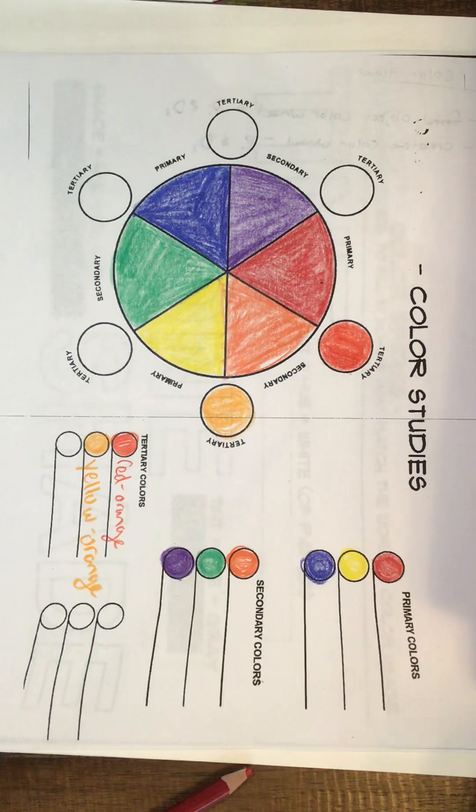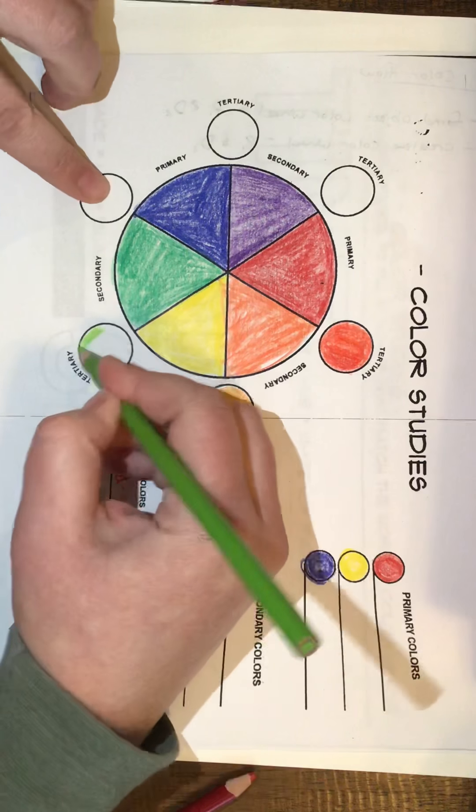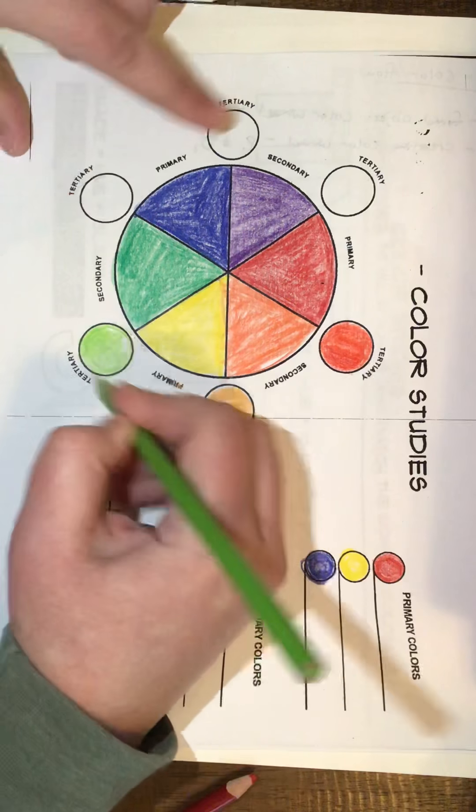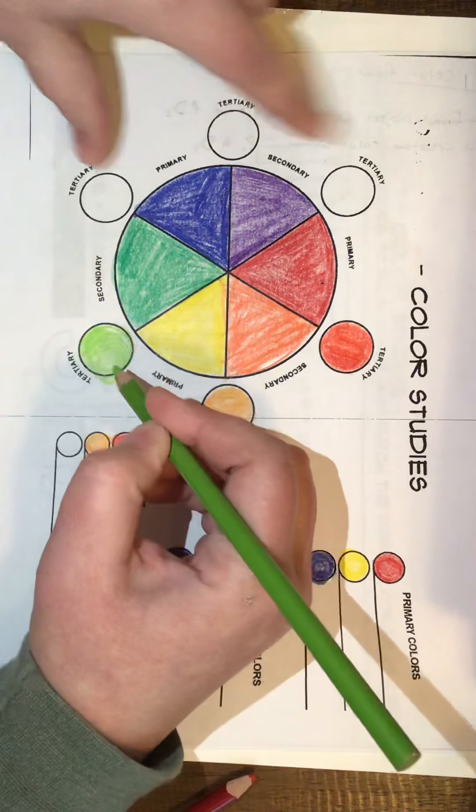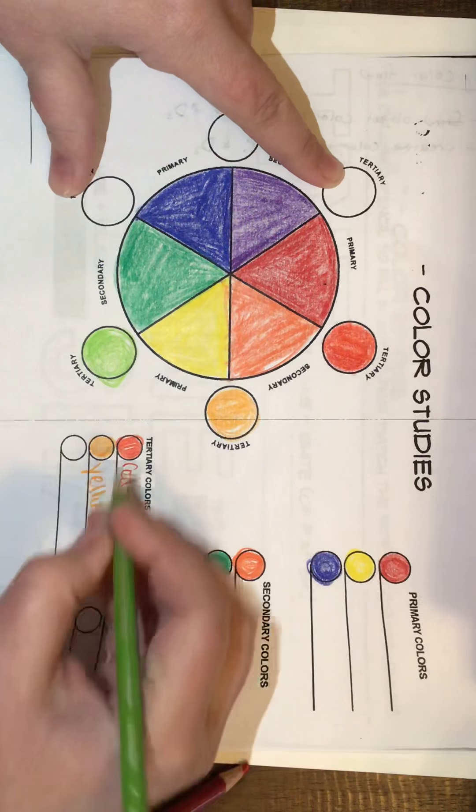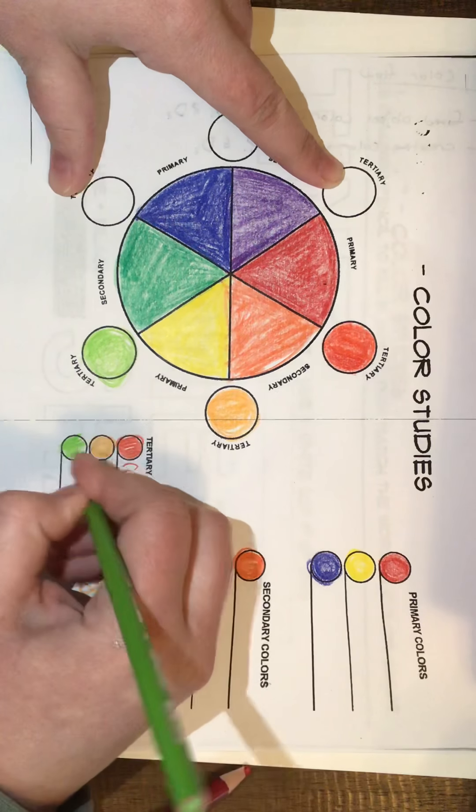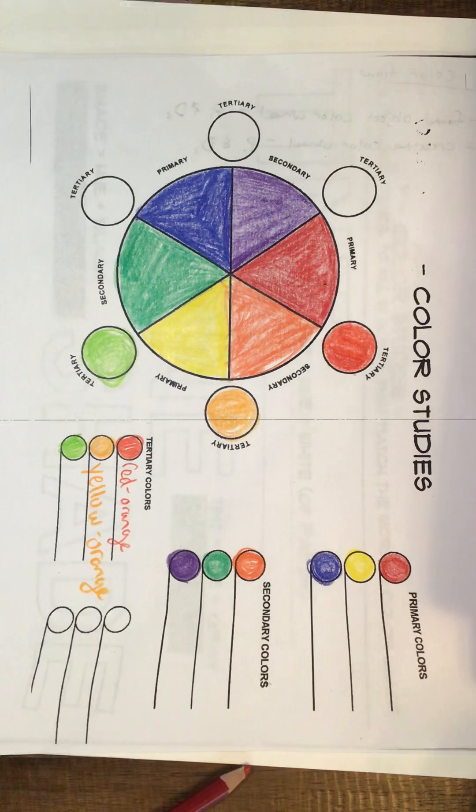So from here on we can go to yellow-green, blue-green, blue-violet, and red-violet. All right, so go ahead and fill out this worksheet. You'll be turning this one in today.